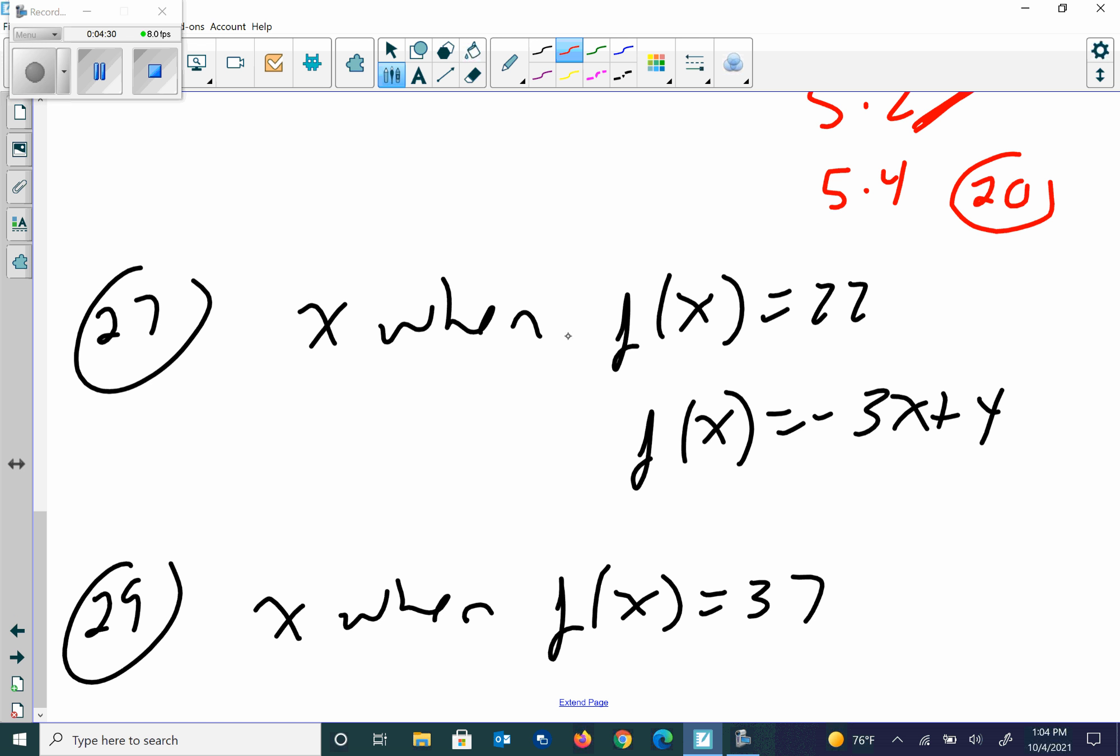And then number 27, we want to know if f of x is equal to 22. So we're going to use our f of x equation. We're going to set these equal to each other. I'm not plugging this in. I'm setting an equal. And I need to go solve this. So I'm going to subtract 4 from both sides. So I get negative 3x is equal to 18. Divide each side by negative 3. So I get x equals negative 6.